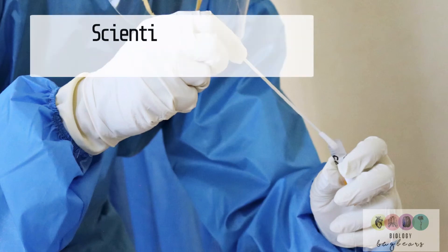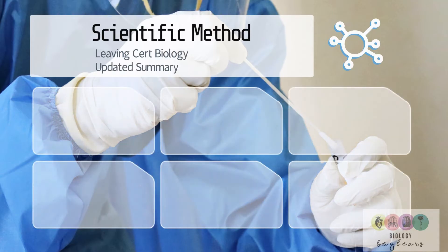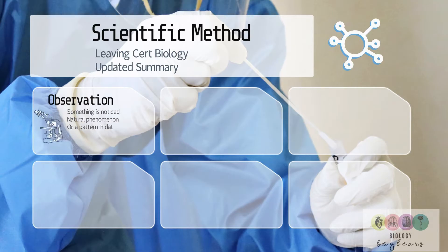The scientific method. This video is geared towards the Leaving Cert Biology course and this is an updated summary. This is probably one of the first topics that you study in fifth year. So the first step of the scientific method is an observation — something is noticed by the scientist. Perhaps it's a natural phenomenon or maybe it's a pattern in data, and this inspires questions.